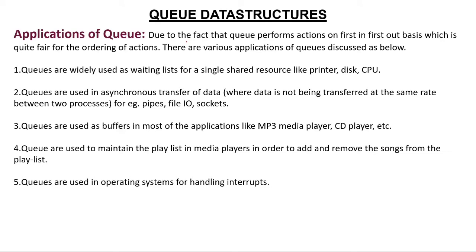Applications of Queue: Queues are widely used in waiting lists for a single shared resource like a printer. In an organization you may have many desktops or laptops attached to a single printer. When all computers send print commands simultaneously, the printer — being a non-shareable resource — processes requests one at a time. A queue is created: computer one's request comes first, then computer three, then computer two, then computer four, and printing takes place in that order.